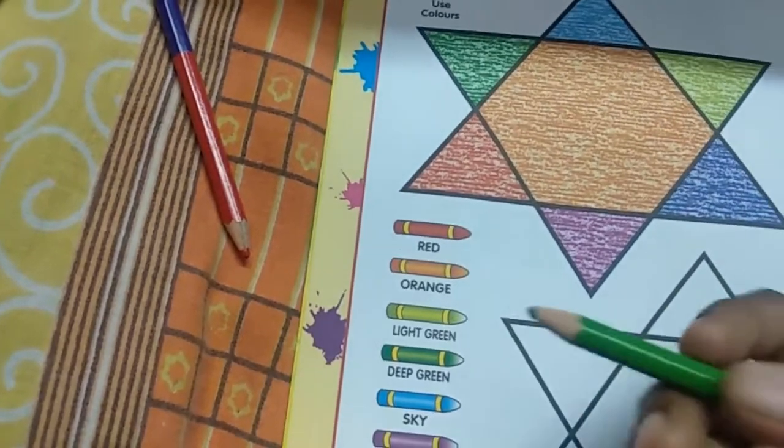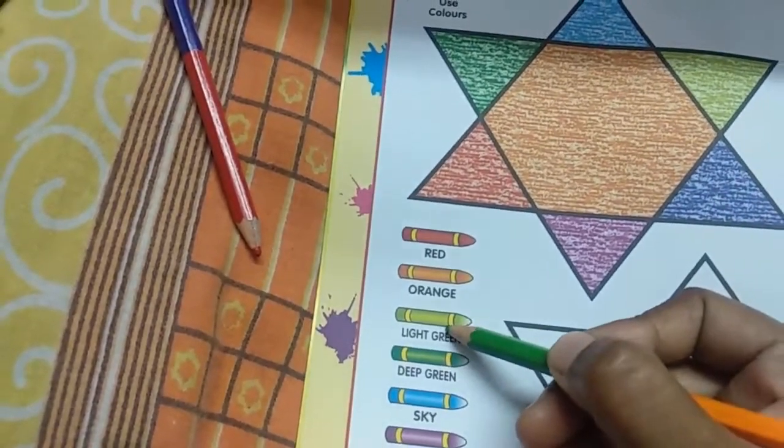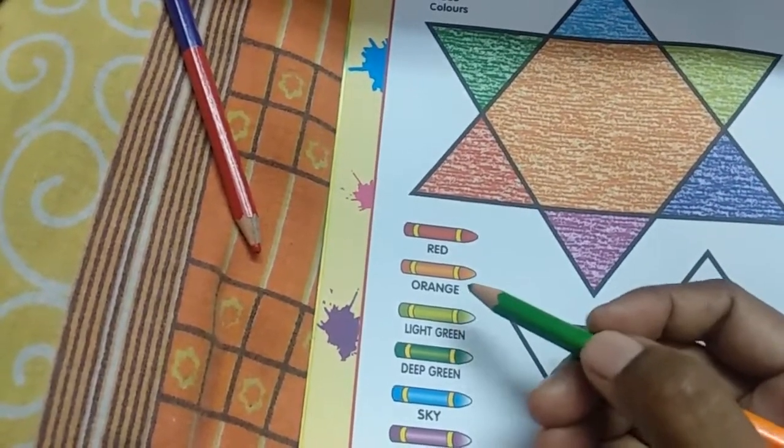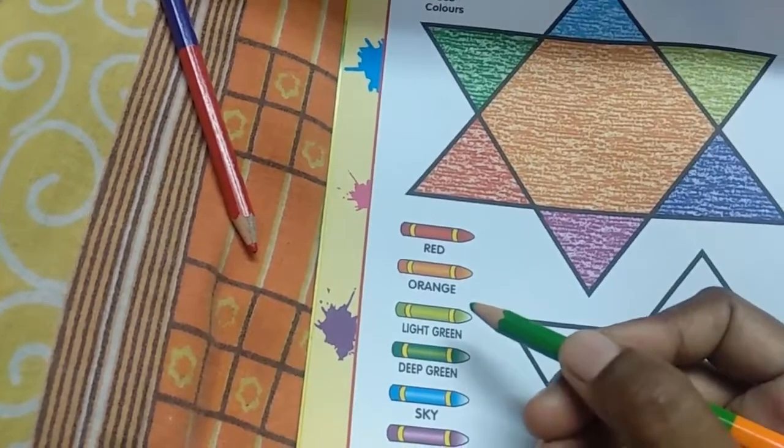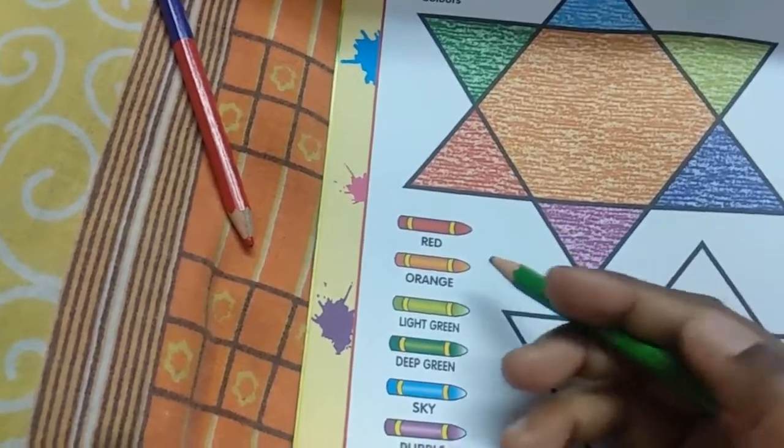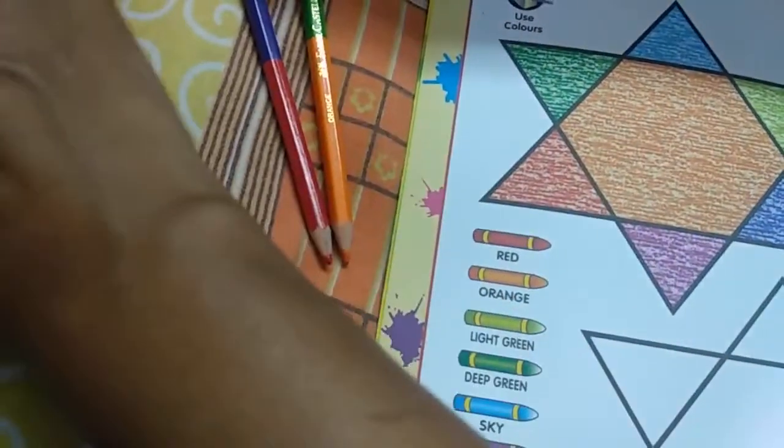And the third color is light green. The color of parrot is light green. And the new leaves in the plant that comes is also in light green.